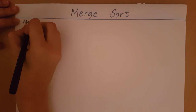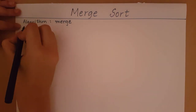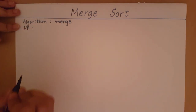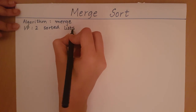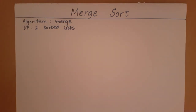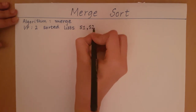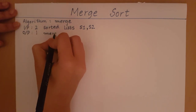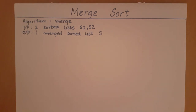So let's start writing the pseudocode for the merging algorithm. This is going to be an algorithm which I will call Algorithm Merge. The input is going to be two sorted lists — let's call them s1 and s2 — because we can implement merge sort using a linked list as well, not necessarily an array, just a collection of sorted elements. The output is going to be one merged sorted list which I am going to call s.